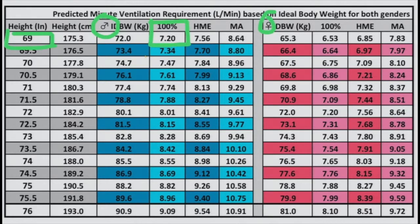Going to the female side of the table and looking for 7.2 liters, you can see that corresponds to a female that is 72 inches tall.